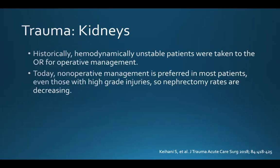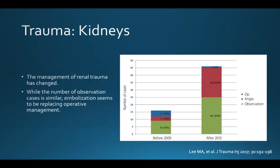Historically, hemodynamically unstable patients were taken to the operating room for operative management. Today, non-operative management is preferred in most patients, even those with high-grade renal injuries, and nephrectomy rates are decreasing. This was confirmed in a 2017 study by Lee, who looked at renal interventions before 2009 and after 2010, showing that the management of renal trauma has clearly changed. While the number of observation cases is similar, embolization seems to be replacing operative management in these patients.